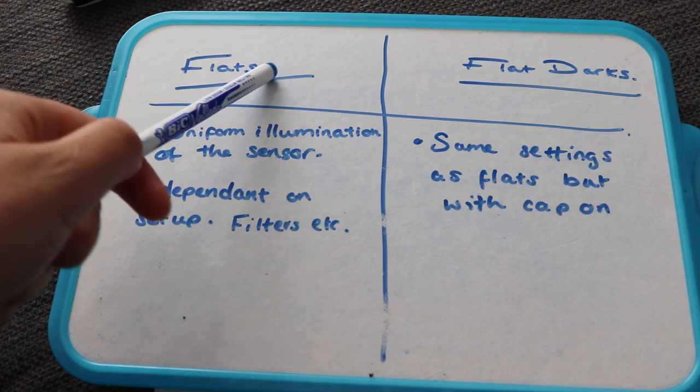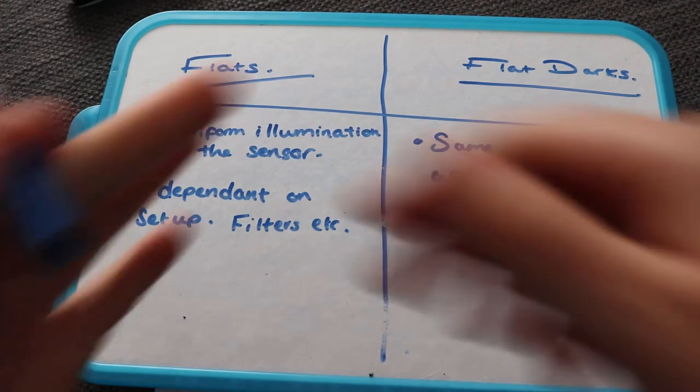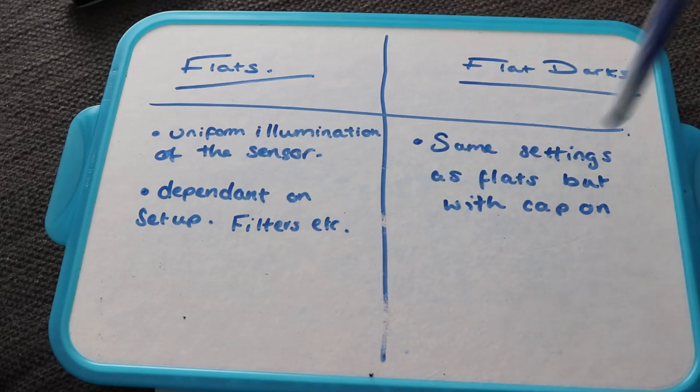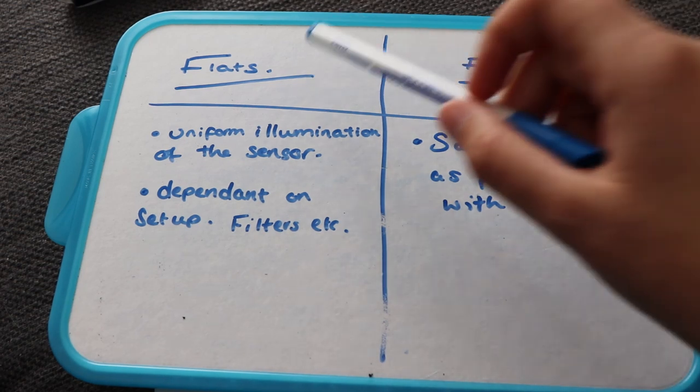So how do we take our flats and flat darks? Flat darks are really easy. Once you've figured out the settings for your flats, put the cap on and take some more images. And these are your flat darks.